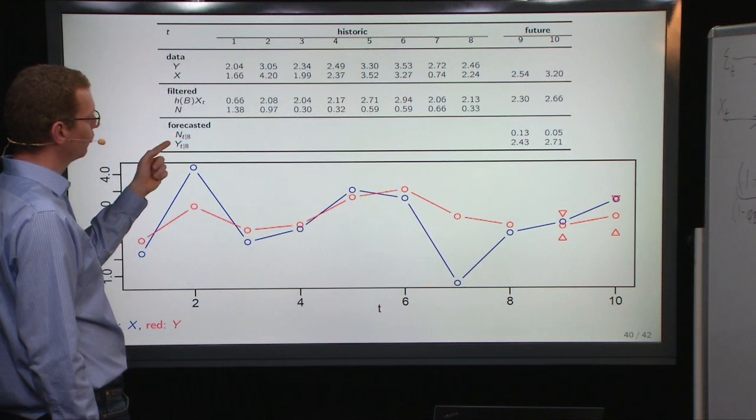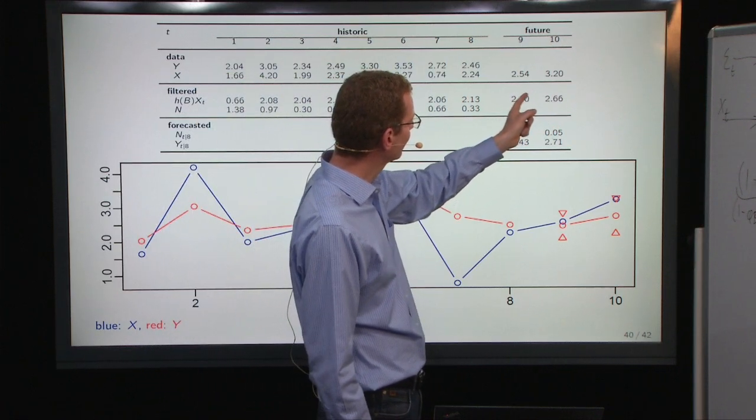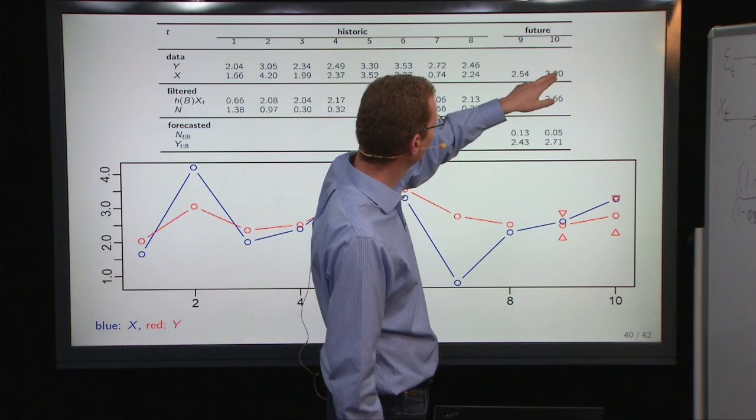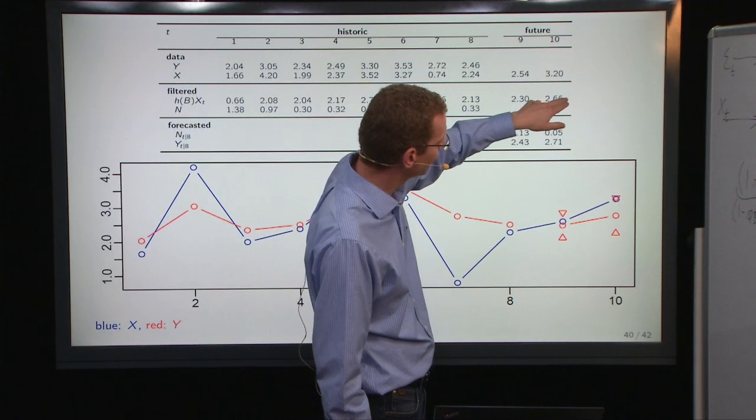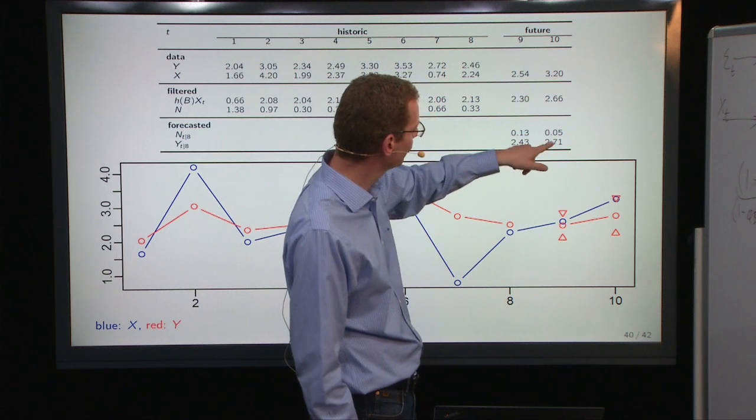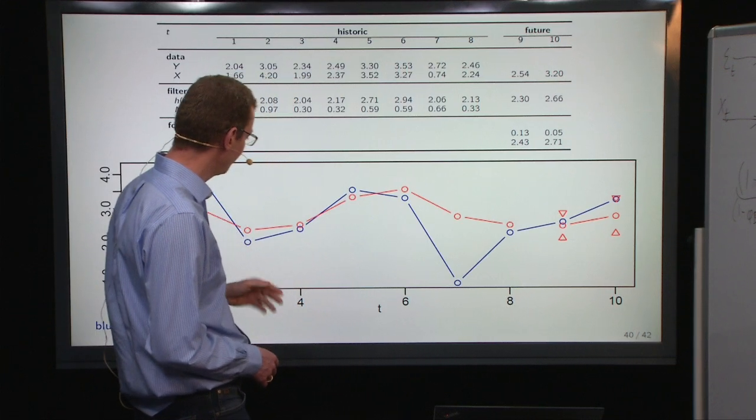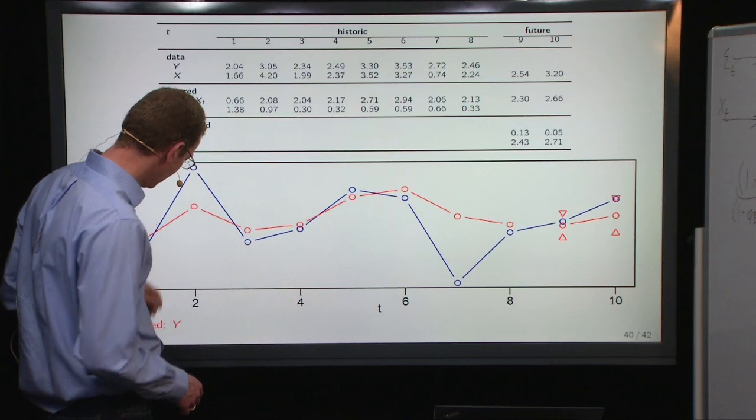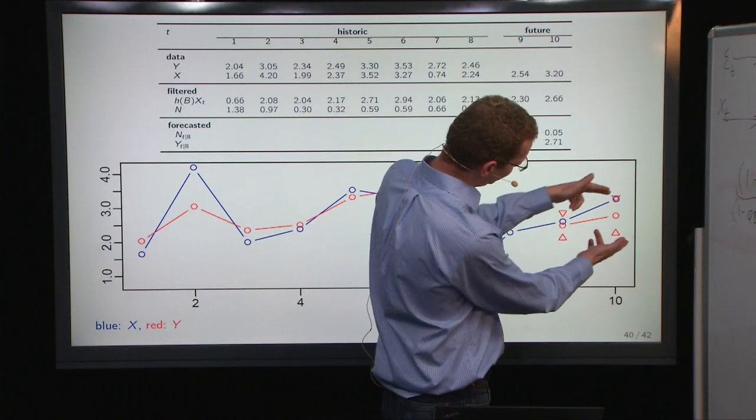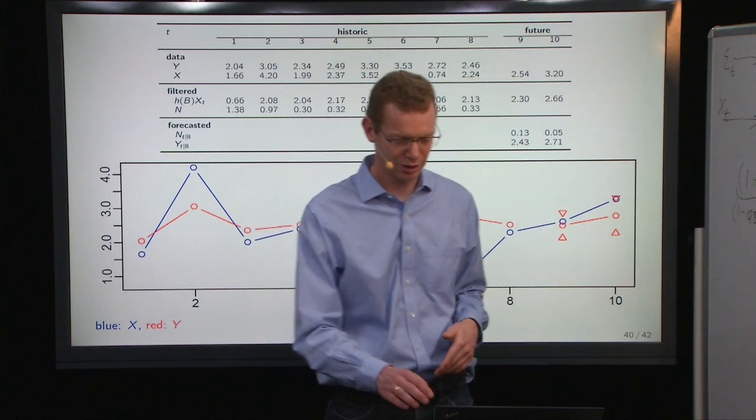Likewise, we can predict Y by, since we filtered X, filtered the system here, X through the system, then we have the filtered outcome of the system, and then we just have to add those two numbers to get the output prediction. And if we just display here, then we have Y is red, and blue is the input here, and then we see that the prediction interval increases pretty much as expected.